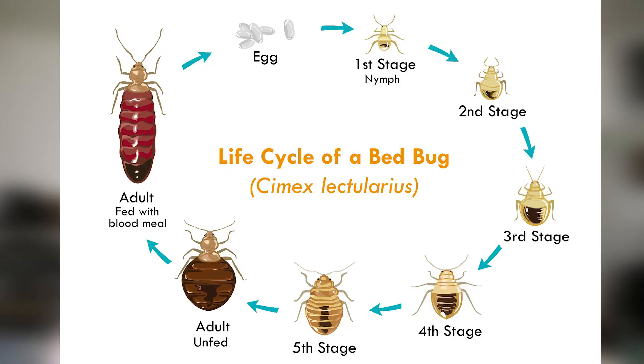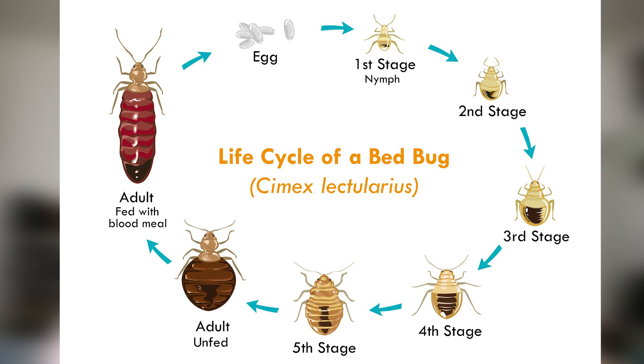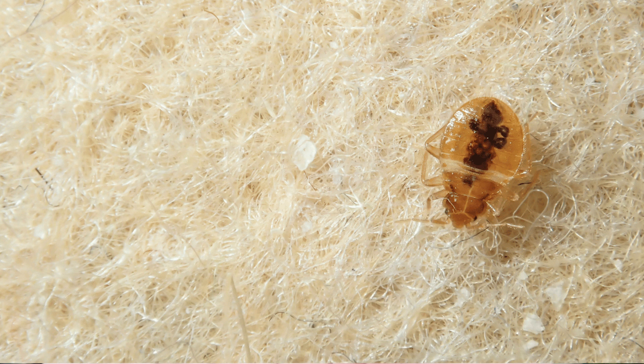The color of bed bugs can vary depending on their age and whether they have recently fed. When unfed, a bed bug has a light tan or straw color. Bed bugs that have fed on blood are darker, taking on a reddish-brown hue because of the blood inside their body.